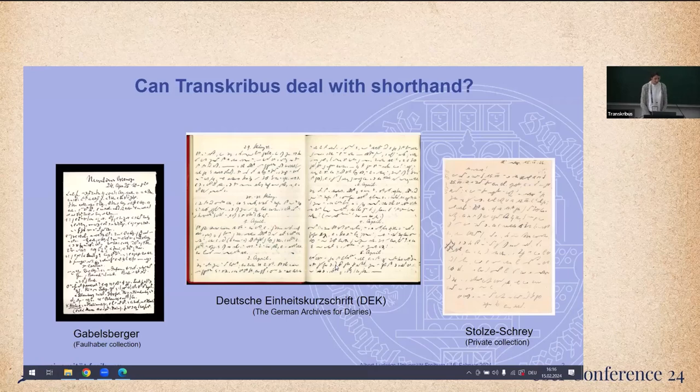Okay, let's continue. Deutsche Einheitskurzschrift in the middle, or German unified shorthand, is still in use as the official shorthand system in Germany and Austria.